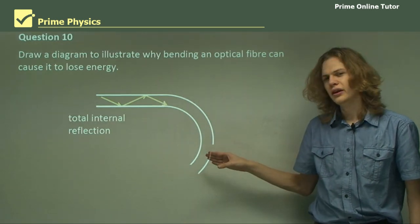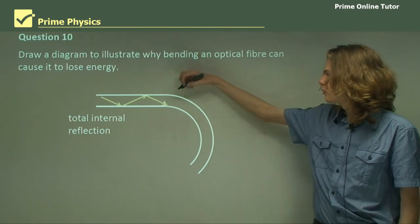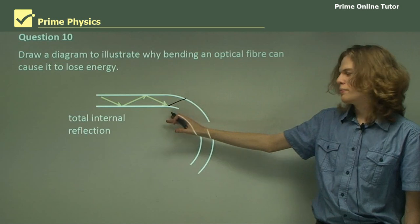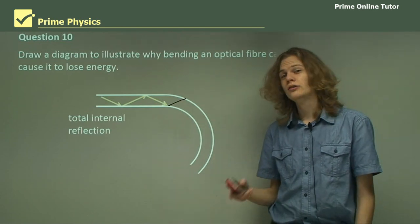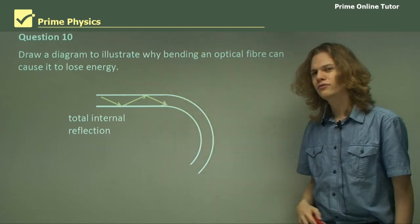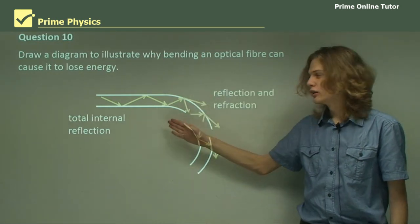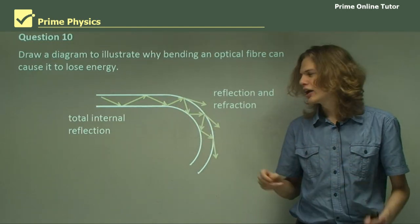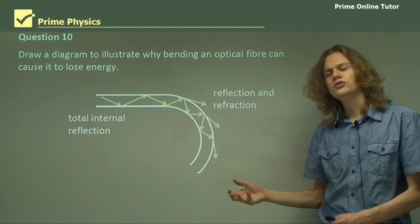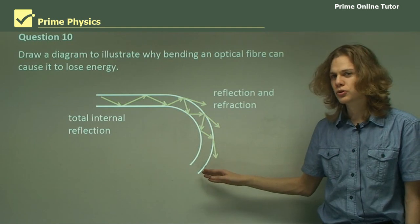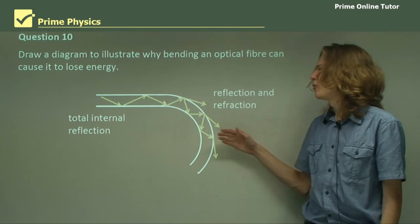But now we get to the bend in the optical fiber — what's going to happen here? Well, at first we'll continue on with our total internal reflection, but then suddenly we're trying to pass into the cladding at a very, very small angle. And this means that instead of getting total internal reflection, we'll simply refract and start bending away from the normal. We will of course get a little bit of reflection happening every time, but more importantly we're getting refraction happening every time, which means we're losing energy. And because we keep losing energy, and it's always the same proportion of energy lost, the amount of energy left inside the optical fiber gets less and less. So this is because we're getting reflection and refraction, and not total internal reflection.